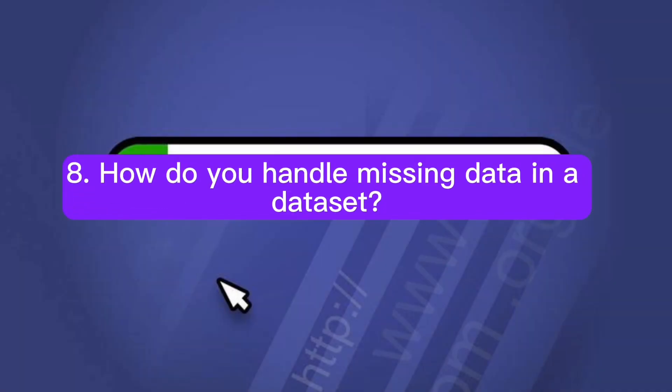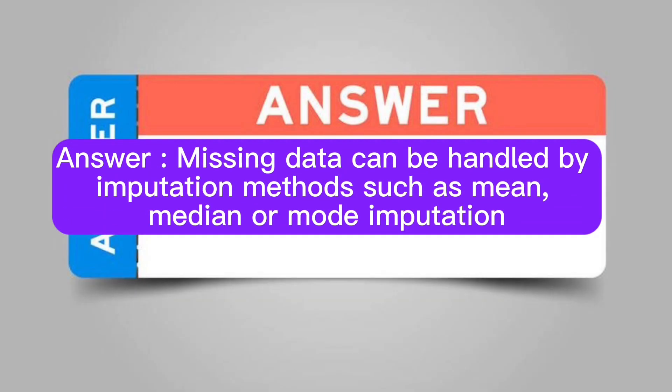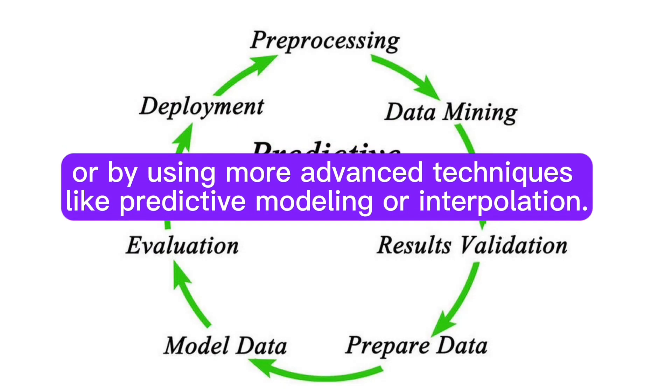Question 8: How do you handle missing data in a dataset? Answer: Missing data can be handled by imputation methods such as mean, median, or mode imputation, or by using more advanced techniques like predictive modeling or interpolation.